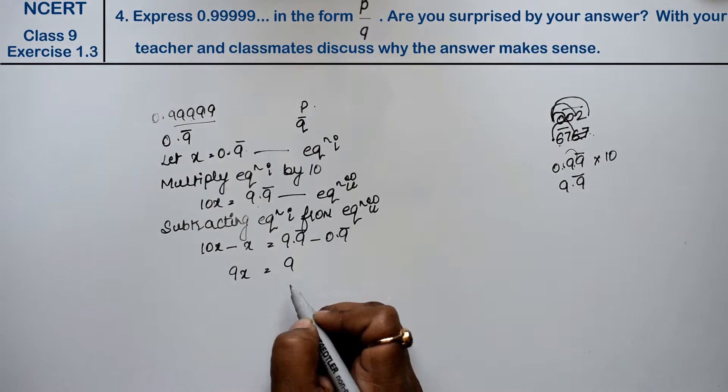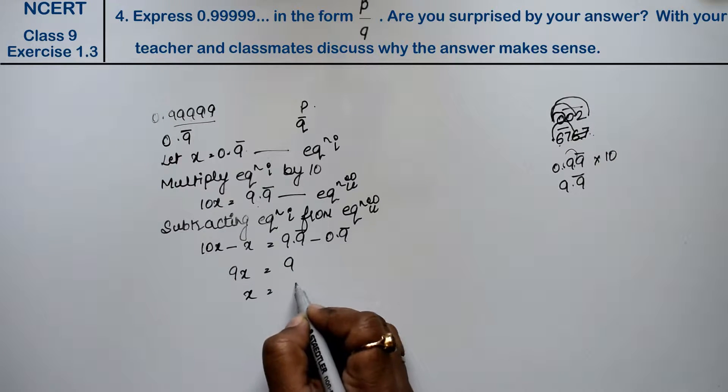So it is 9. So what happened to x? x equals 9 upon 9, so what is the answer? 1.